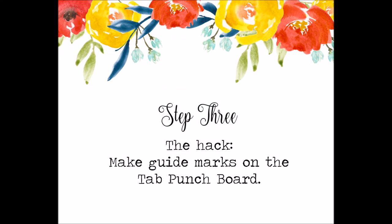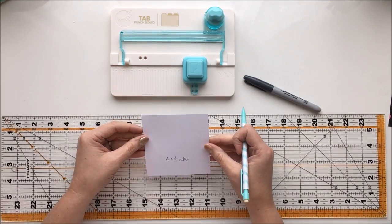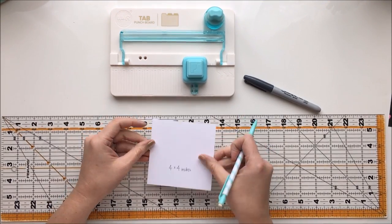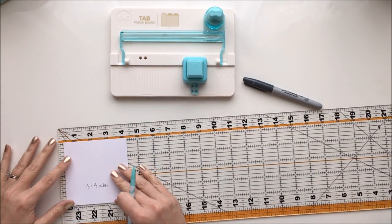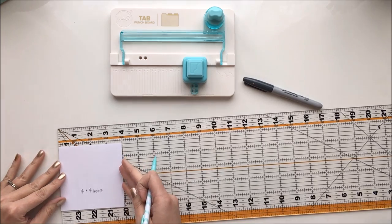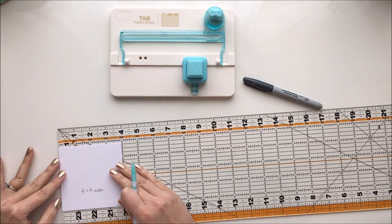So step three, here comes the hack. We need to make some guide marks on the tab punch board. So start with a four inch piece of paper. I've just got a four by four square here that was in my scrap pile. And you need to mark the center of it. So you're going to put a pencil mark at two inches.